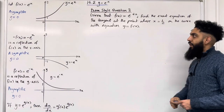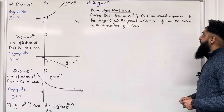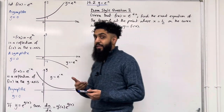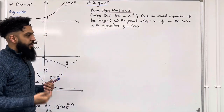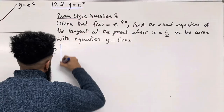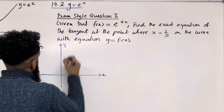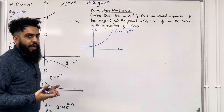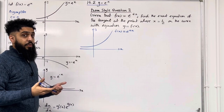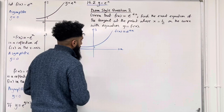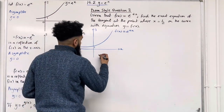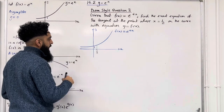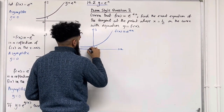Let's have a look at exam style question 3. Given that f of x is equal to e to the power 4x, find the exact equation of the tangent at the point where x is equal to a half on the curve y equal f of x. I'll sketch f of x equal e to the power 4x and label the tangent at x equal a half. The y-intercept is 1. At x equal a half, I substitute into the function: y equal f of a half equals e to the power 4 times a half, which is e to the power 2 in exact form.